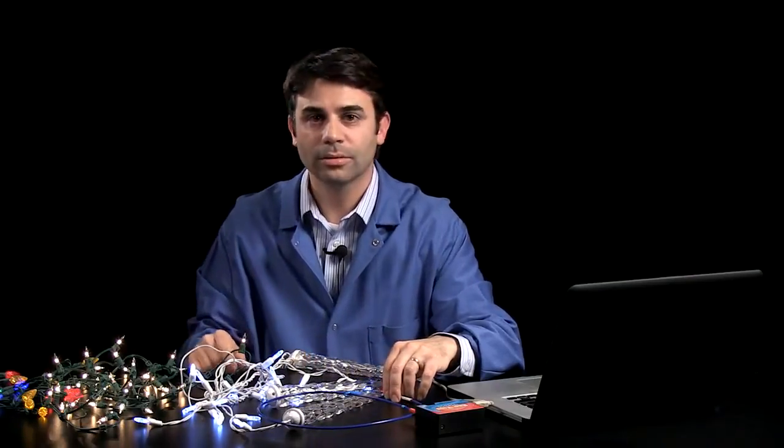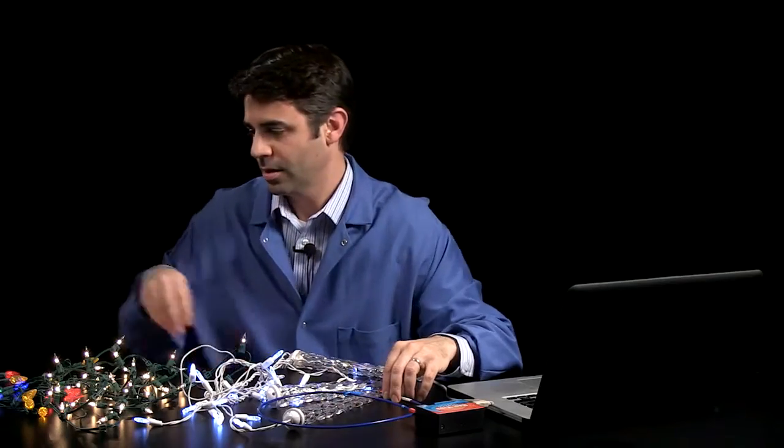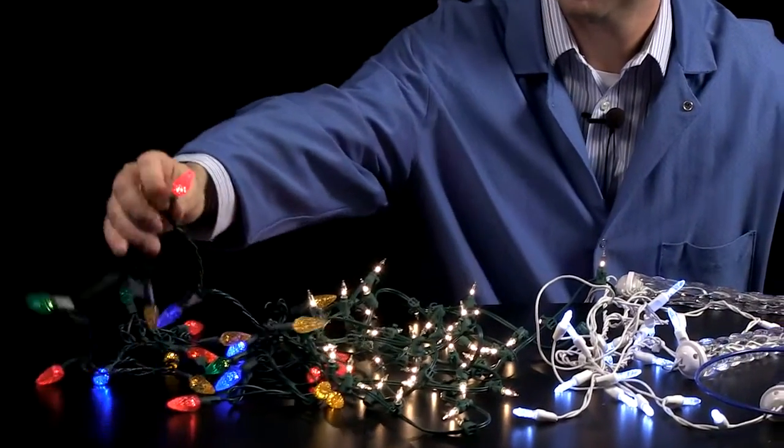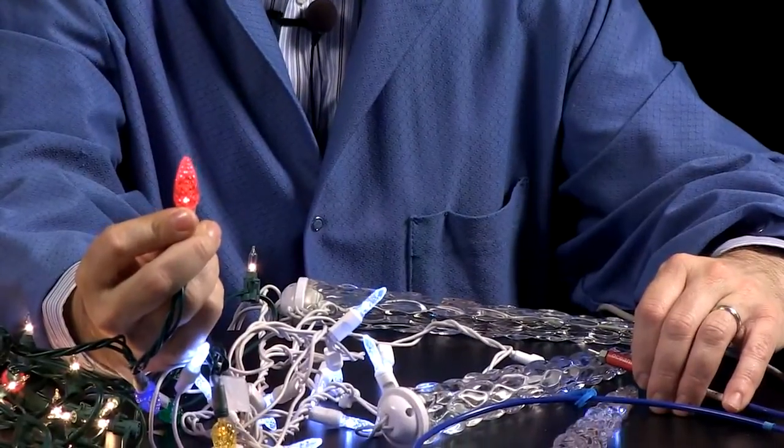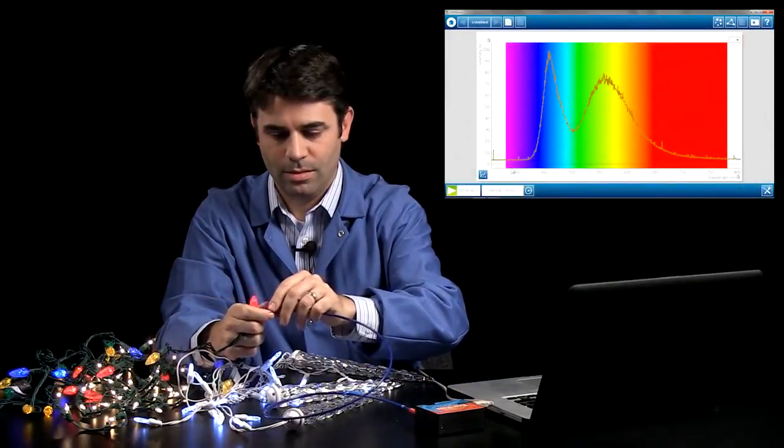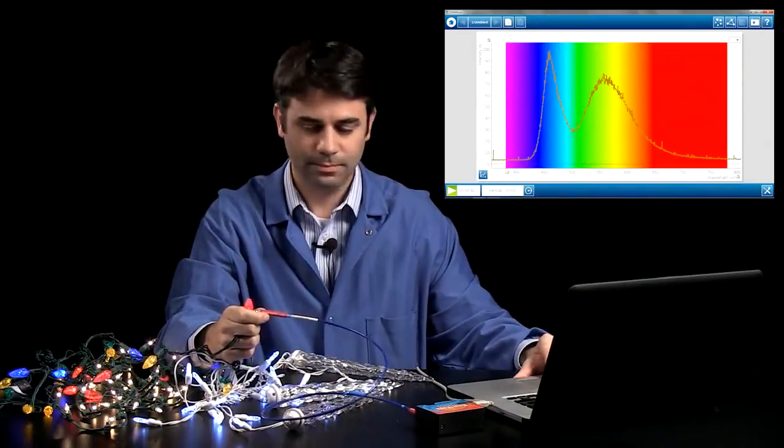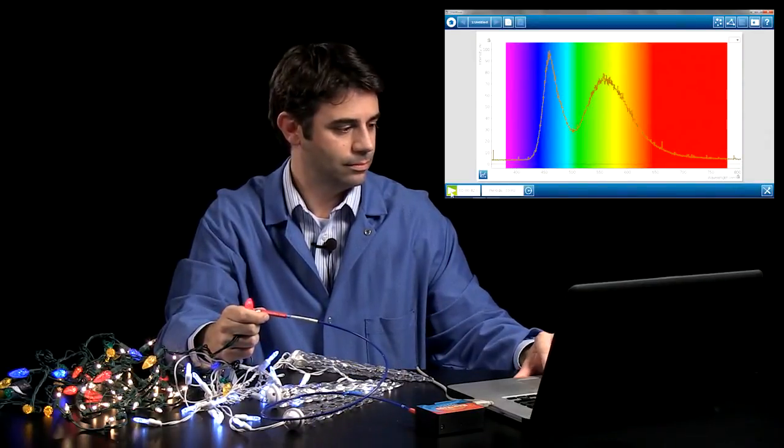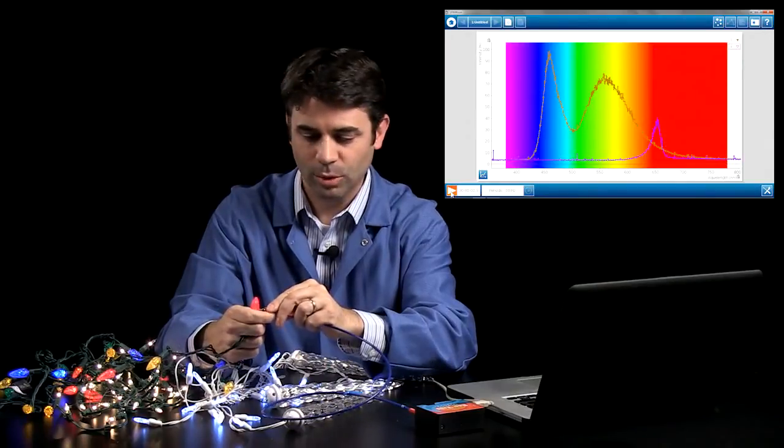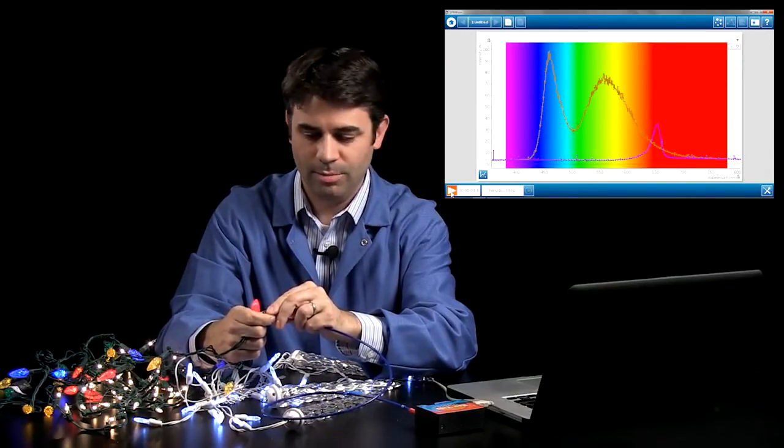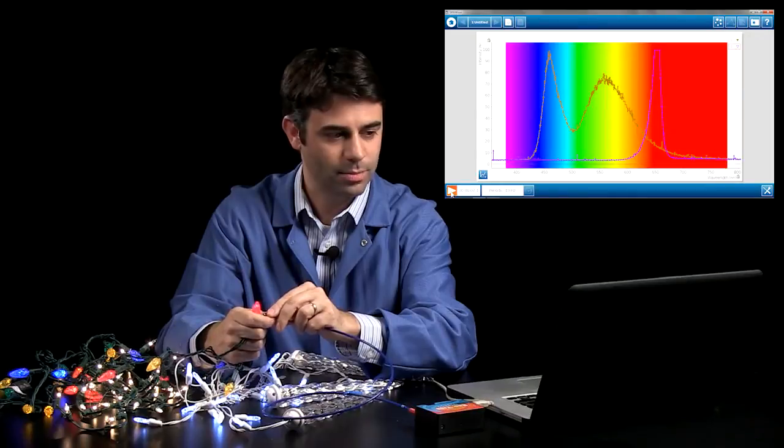We can also look at the colored LEDs. First, let's take a look at red. We'll start a new run. It's also a very bright bulb, and it is very much in the red part of the spectrum.